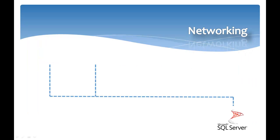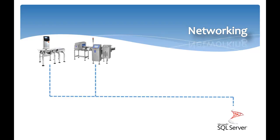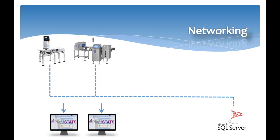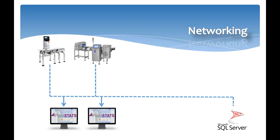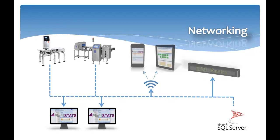PlantStats is a network solution that fully integrates into your existing network. Checkweighers are fitted with Ethernet conversion boxes that enable data to be collected on a central network. Users can view the analysis and reports using Internet Explorer on their existing PC without additional software. This flexible solution also gives access on handheld devices and allows remote displays with a minimum of cabling.